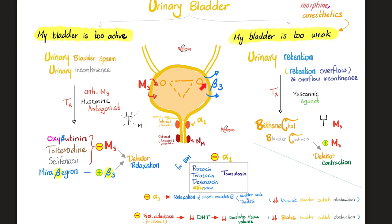The sympathetic nervous system is fight-or-flight. If you're running from a tiger, you don't want to urinate. So the sympathetic, via beta-3 stimulation, relaxes the detrusor muscle and inhibits urination. If the bladder is too active, we want a beta-3 agonist such as mirabegron. Both muscarinic M3 antagonists and beta-3 agonists relax the detrusor muscle and make the bladder less active — good for increased bladder spasm or urge incontinence.